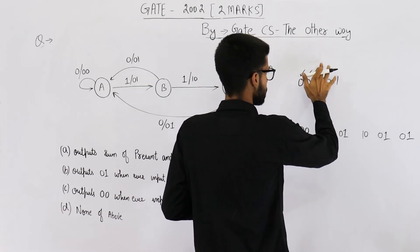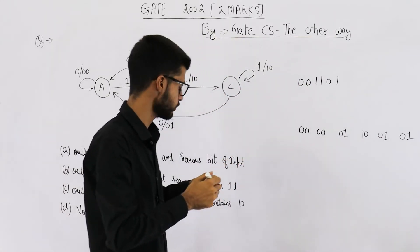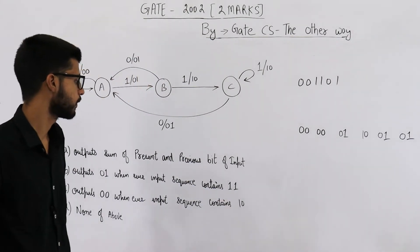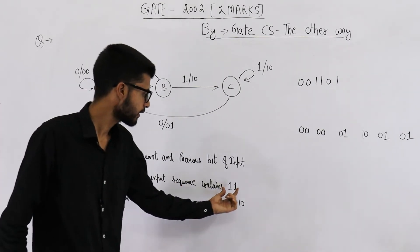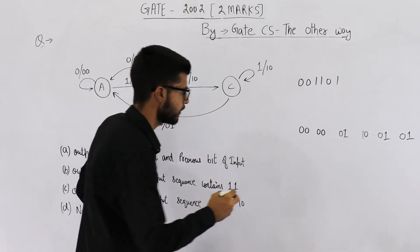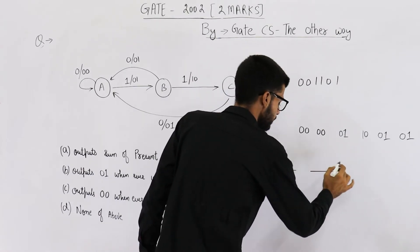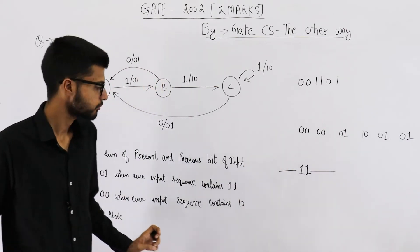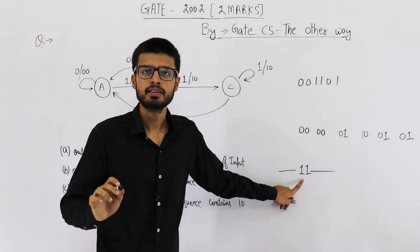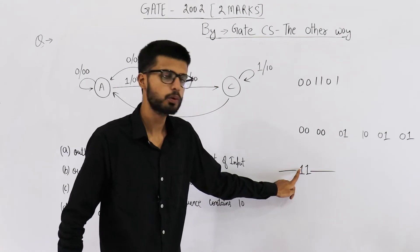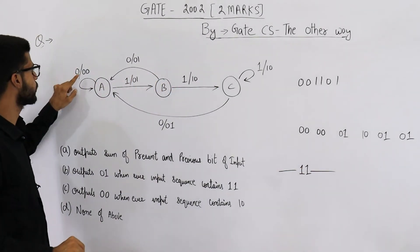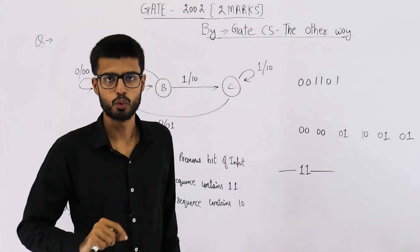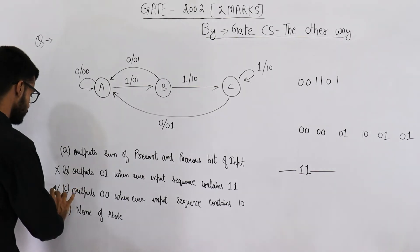Now let's have a look at the options. Option B says output prints 0 1 whenever the input sequence contains 1 1 — this is completely wrong. Whatever input string you give, if it contains 1 1 it will be of at least length 2, so the output for such a string will be of length at least 4, since for each input bit we are printing 2 bits. This option is rejected, and option C is also rejected.